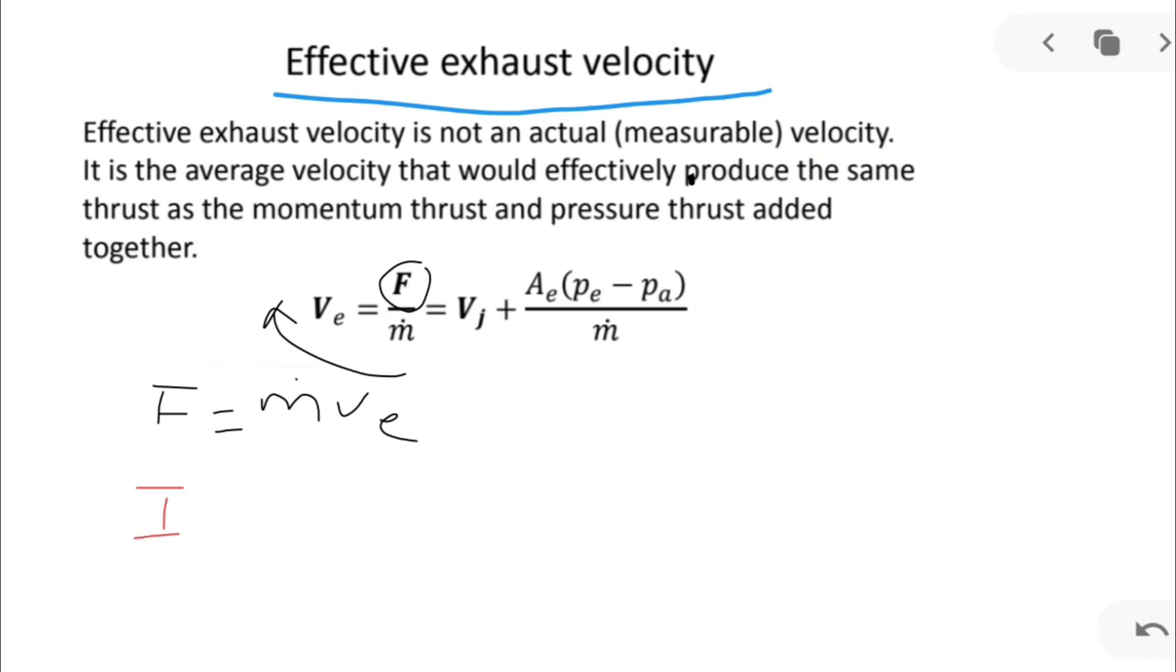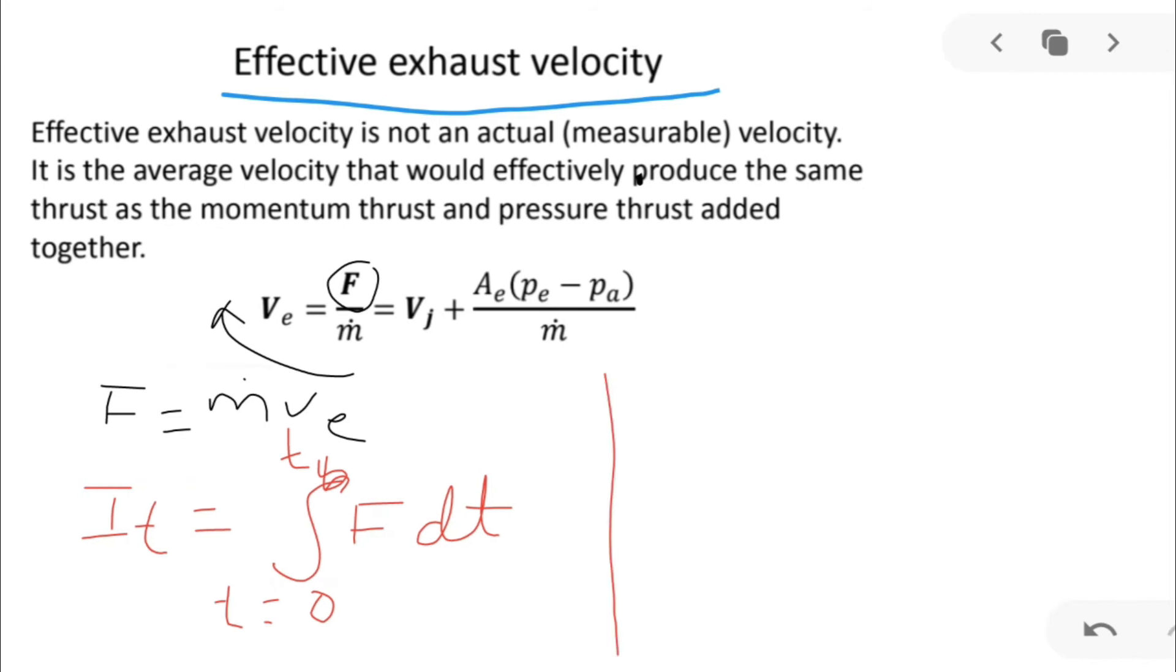We know that total impulse is equal to integration of thrust with respect to time, T is equal to 0 to Tb, burning time. Here F is equal to m dot Ve, equation 1. Total impulse is equal to integral from 0 to burning time Tb of m dot Ve dt.